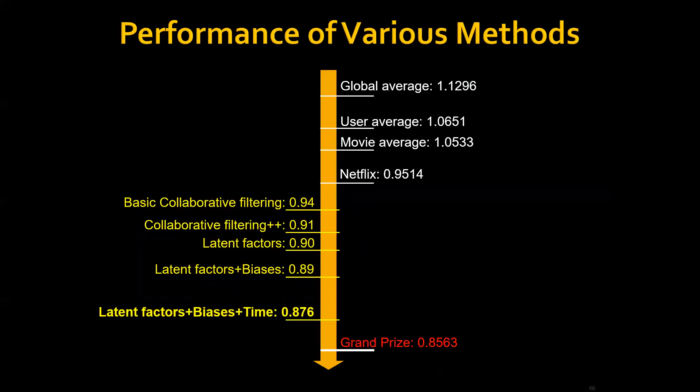How are we doing so far? Remember that with the biases, we can get the performance of 0.89. If we add the time factors into the model, we can actually do much better. We can get an RMSE of 0.876. But still we're one step away from the grand prize.